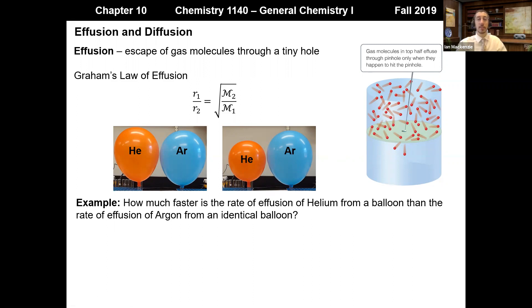So let's actually just go ahead and do this problem here. How much faster is the rate of effusion of helium from a balloon than the rate of effusion of argon from an identical balloon? Well, we can simply substitute in their molar masses. And what we'll find is that the rate of helium relative to the rate of argon, basically the rate of helium effusion is 3.16 times the rate of argon effusion from the balloon.